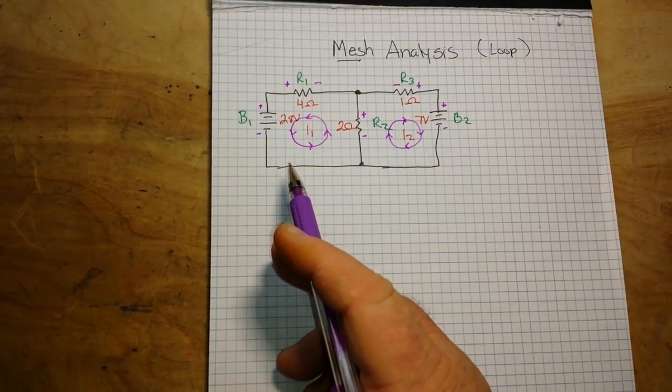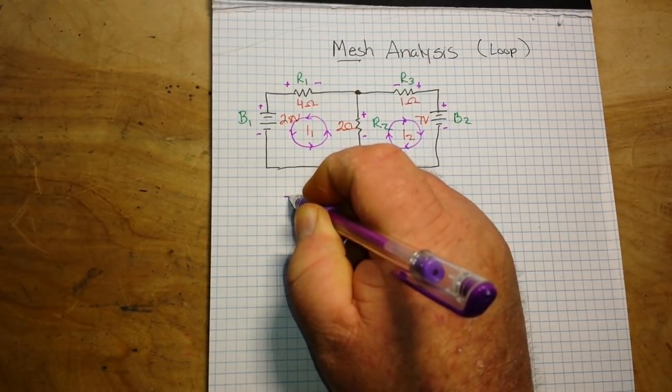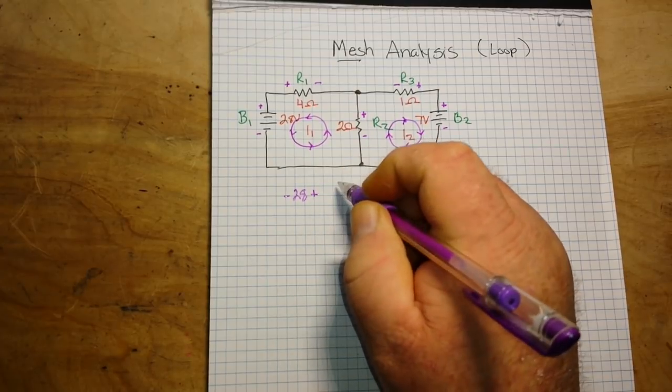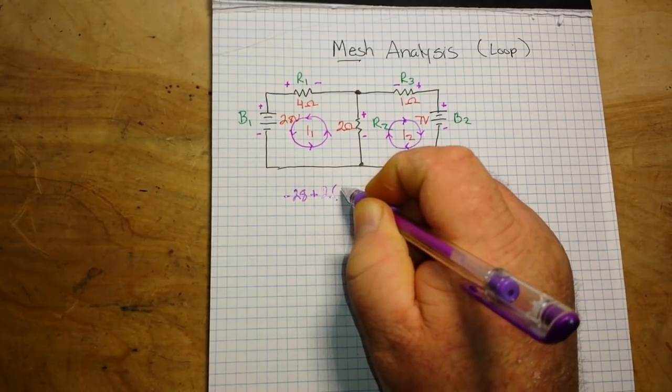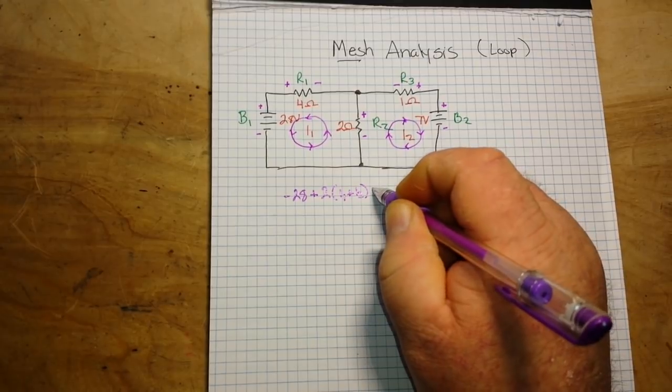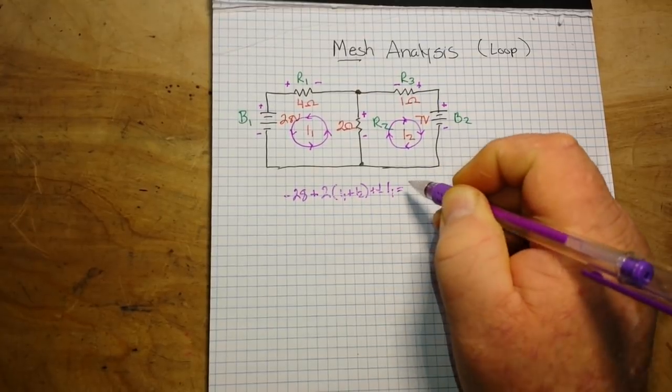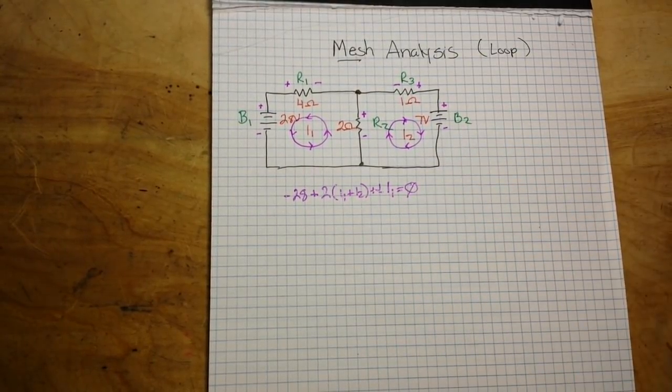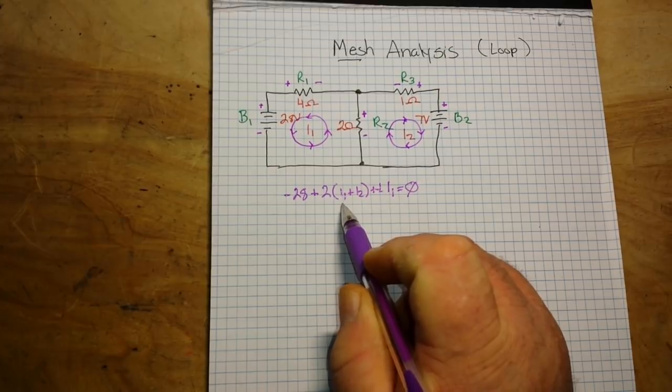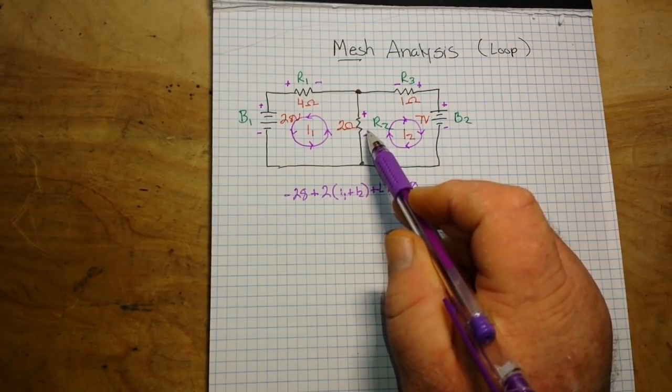If we start on our left-hand loop and use Kirchhoff's voltage law, we can work out an equation that says minus 28 plus 2 times (I1 plus I2) plus 4 I1 equals 0. Okay? You have to notice here that the middle of this equation uses the sum of the mesh currents as the current through resistor R2. That's important.